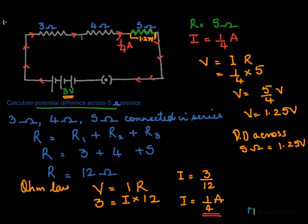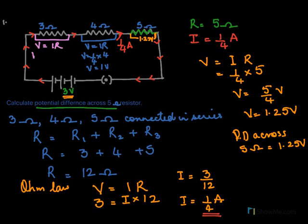In the same manner, we can also find the potential difference across 4 ohms. Applying V equals IR, with the same current of 1/4 amperes and resistance 4 ohms, the voltage across 4 ohms is 1 volt. Similarly, for the 3 ohm resistor, V equals (1/4) times 3, giving 3/4 volts. The same current flows through all resistances because they are connected in series.